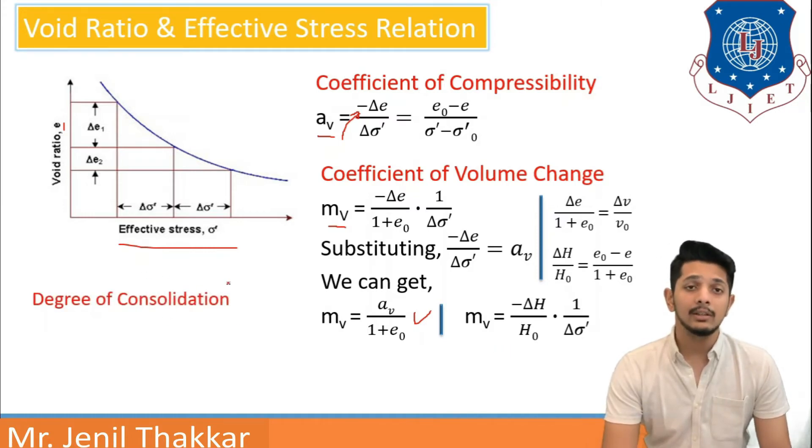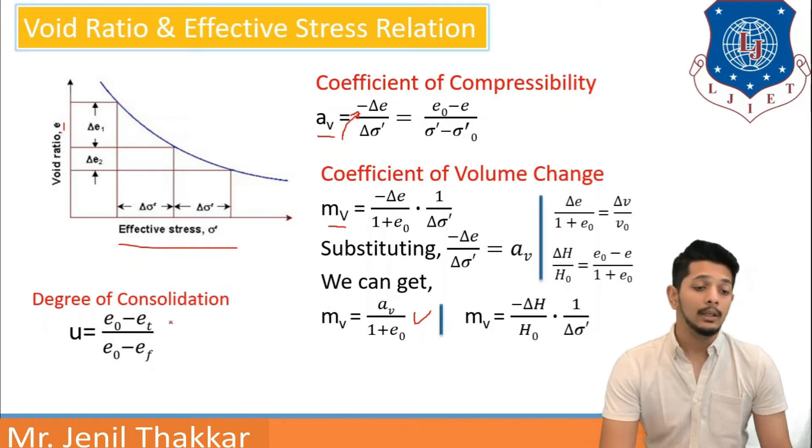Furthermore, degree of consolidation is also defined. Here, E0 is initial void ratio, ET is void ratio at time T, and EF is void ratio final. These are the formulas which will be useful for numerical also.